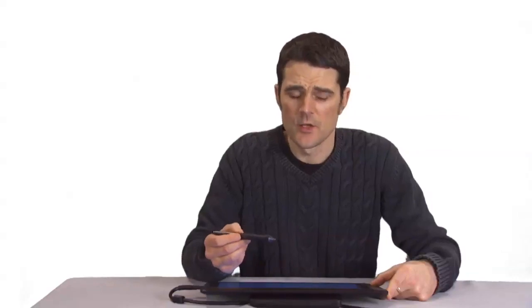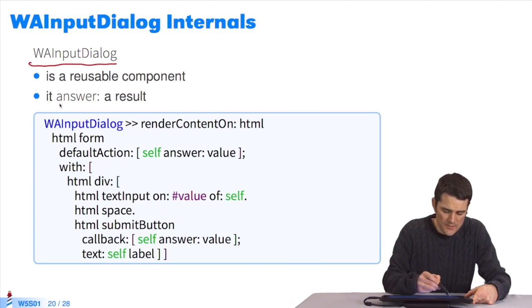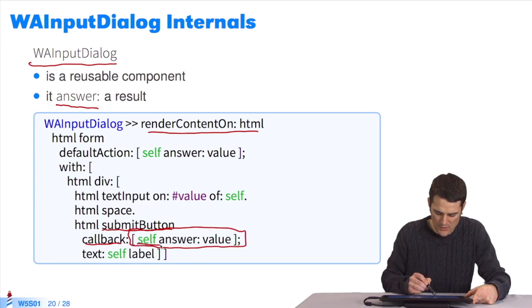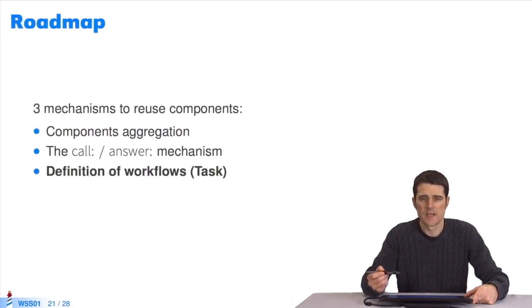So internally, we can examine the workings of this WA input dialog box. It's a reusable Seaside component, totally classic, except for one special feature. It uses the answer method to send back a result. If we look at the renderContentOn method of this component, when we click on its OK button, here is the submit button. It has a callback with a block, and in its callback it will do self answer value. Which means that this will send the result to the component that called it. It will really return to the place from which the call was made and send the result.